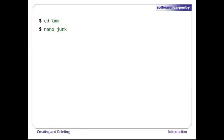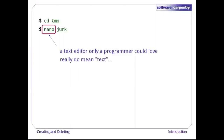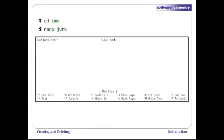Let's change our working directory to temp using cd, then run the command 'nano junk'. Nano is a very simple text editor that only a programmer could really love. It can only work with plain character data, not tables, images, or any other human-friendly media. This is what nano looks like when it runs. The cursor is the blinking square in the upper left — it shows us where what we type will be inserted.